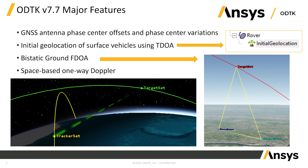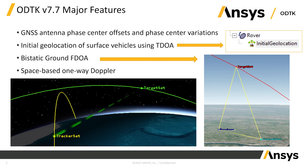Version 7.7 brings us a few significant features. The GNSS antenna phase center offsets and phase center variations is going to be the main subject of this talk, so I'm going to hold off on that for now. We also added an initial geolocation of surface vehicles feature, which takes the initial geolocation feature previously attached to facility objects and adds that onto a surface vehicle as well — using TDOA measurements on a ground-referenced object to determine its location, moving that from a fixed facility to a moving rover.